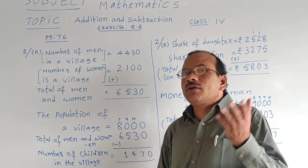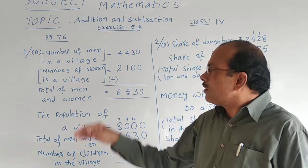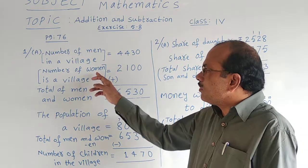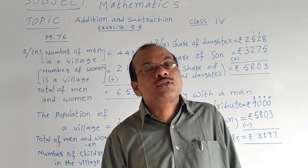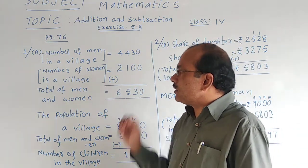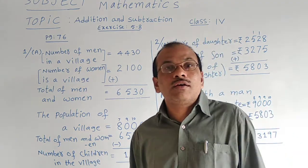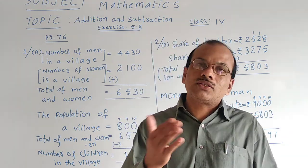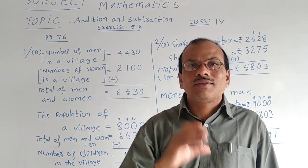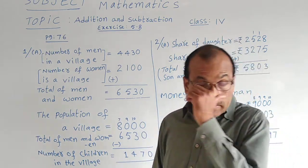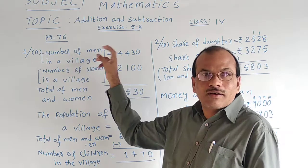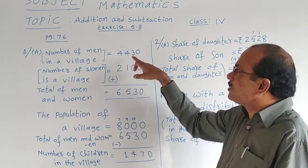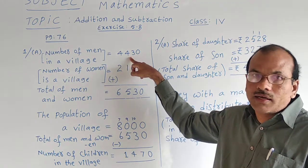First question: there is a village or a city given in the question. Men are there — father, grandfather — all those are called men. Women are there in the village — your mother, grandparents, aunt — all those are called women. Children are also there in the village. Three types of people. Number of men in the village: four thousand four hundred thirty men are given.